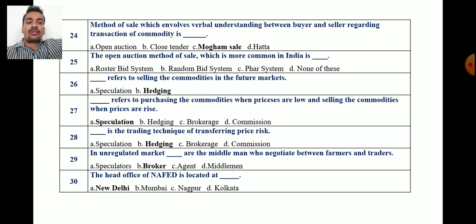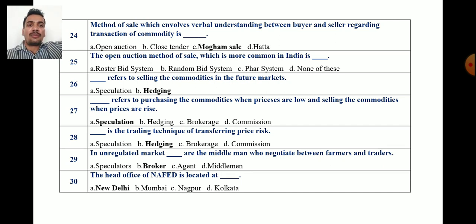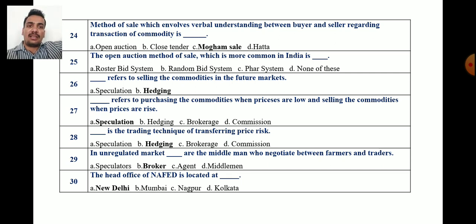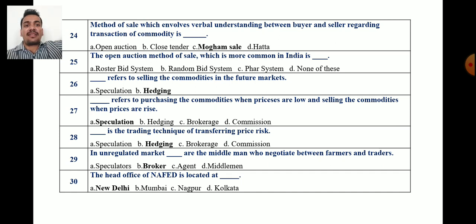Question 26: Blank refers to selling the commodities in the future markets. The correct answer is hedging — hedging refers to selling commodities in a future market. Question 27: Blank refers to purchasing commodities when prices are low and selling them when prices are high or when prices rise.